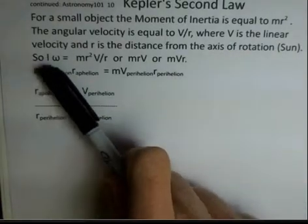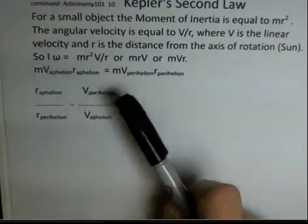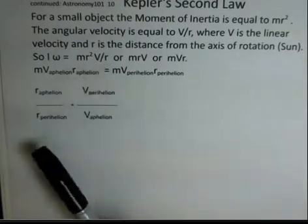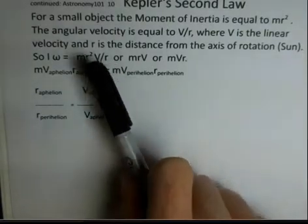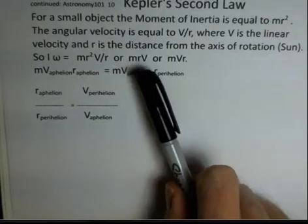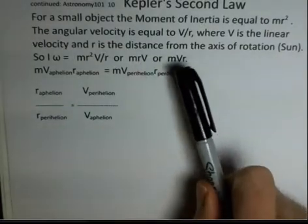So if we have I omega, I is replaced with mr squared, omega is replaced with v divided by r, and the one factor of r cancels. So the angular momentum can be expressed as mrv, or more commonly, mvr.